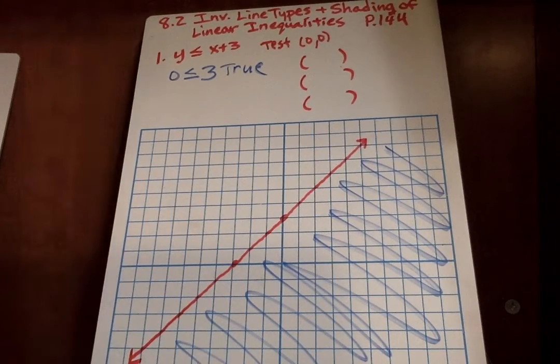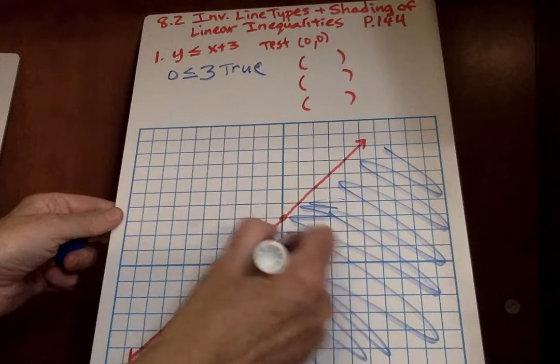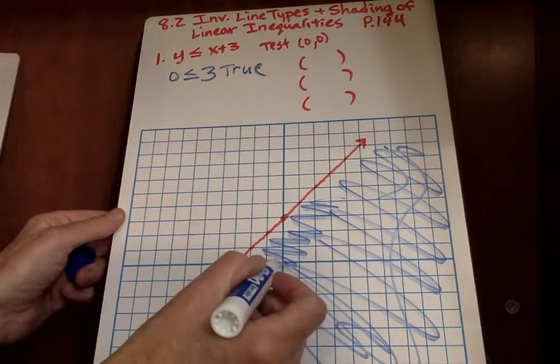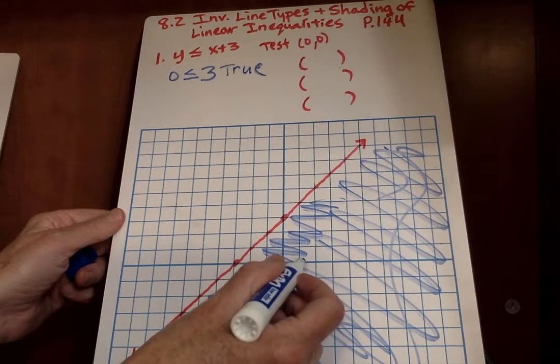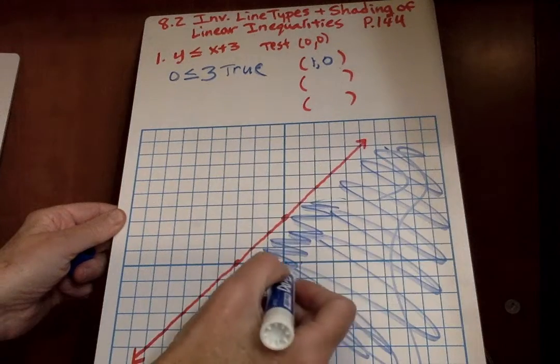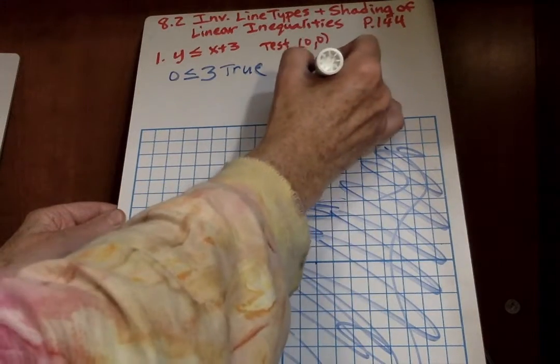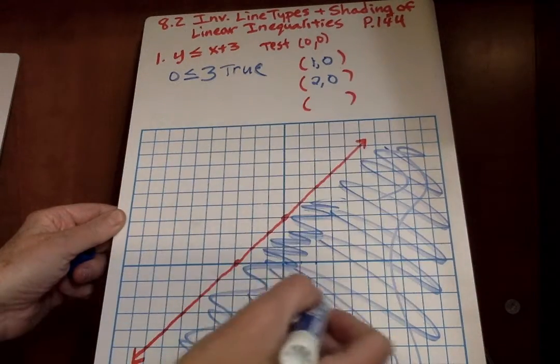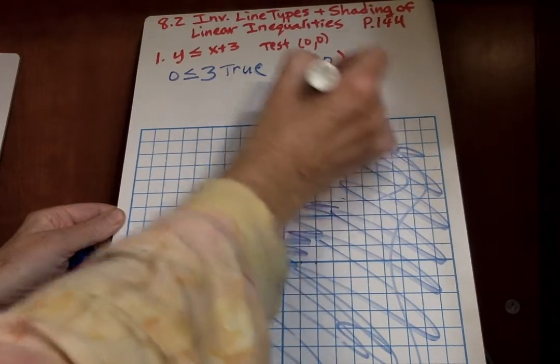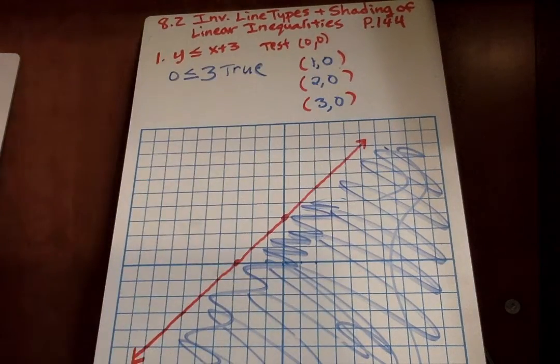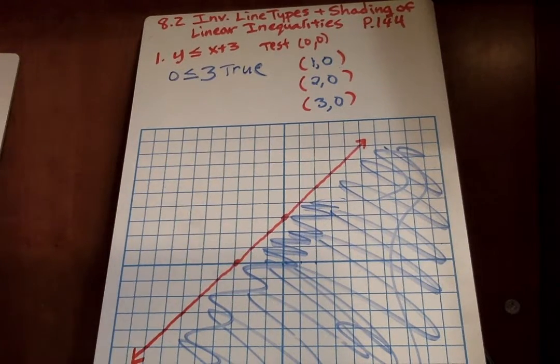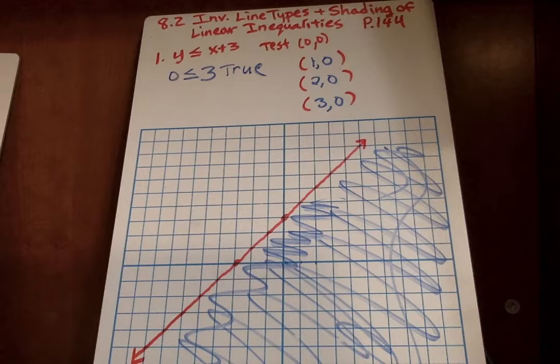Now to come up with three more solutions, I can pick anything, any points in any of this. So we already know 0, 0 works. I can pick 2, 0. And if I want, I can just pick 3, 0. And those should all make true solutions because we shaded that part of the line. All right. Let's go on to number 2.